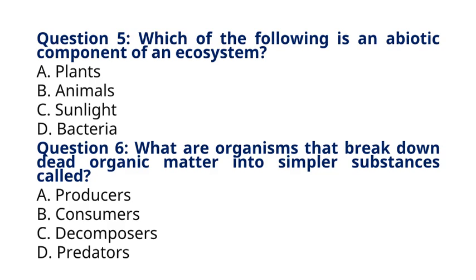Question 6. What are organisms that break down dead organic matter into simpler substances called? A. Producers. B. Consumers. C. Decomposers. D. Predators. The correct answer to question 6 is option C, Decomposers. Explanation: Decomposers are organisms like bacteria and fungi that break down dead organic matter, recycling nutrients back into the ecosystem.